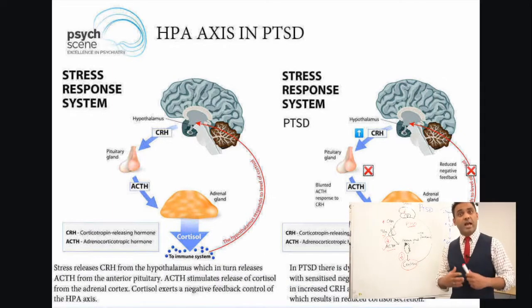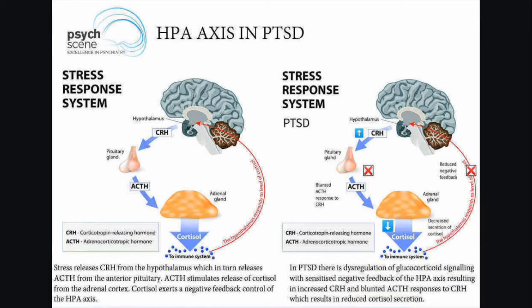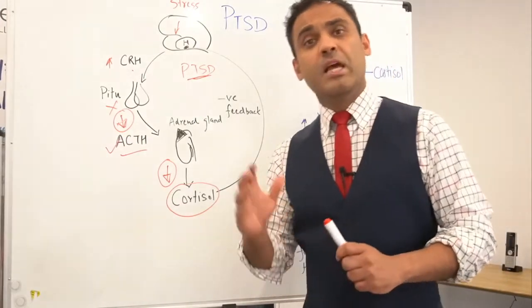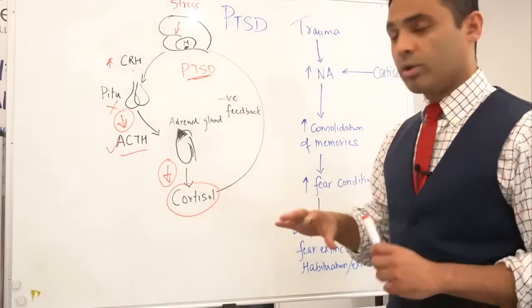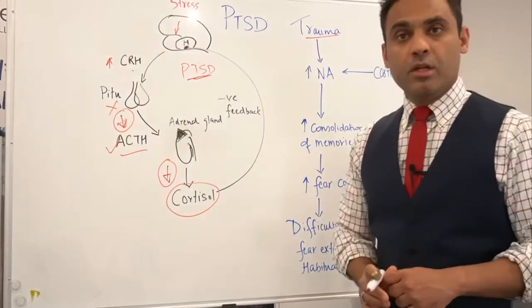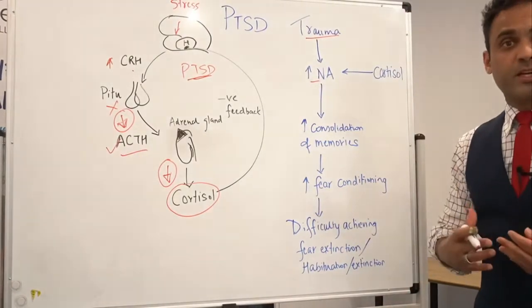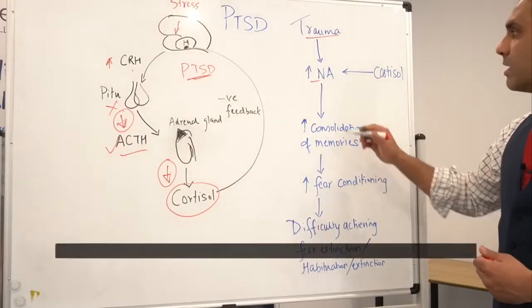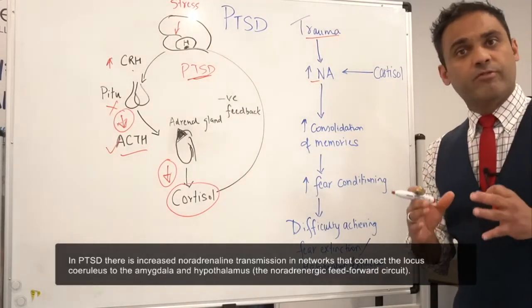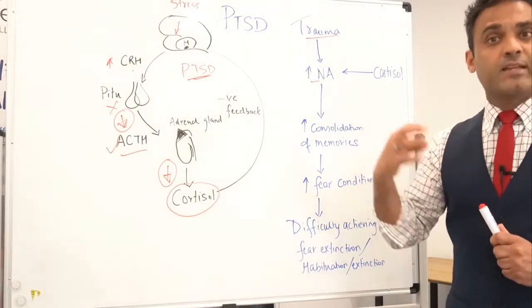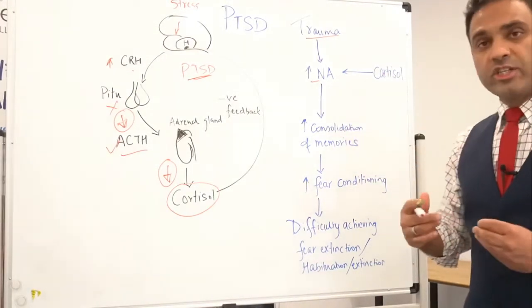This has significant clinical implications. We know that cortisol is anti-inflammatory, and decreased cortisol can induce an inflammatory state. Individuals with post-traumatic stress disorder can have significant inflammatory disorders and cardiovascular diseases as comorbidities, so it's important for clinicians to look at that. Additionally, trauma results in an increase in noradrenaline, which is the neurotransmitter responsible for the fight-and-flight response. The function of noradrenaline is to consolidate memory — for example, a certain amount of stress during exams is beneficial because it allows us to remember things.